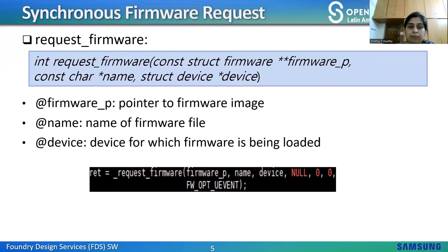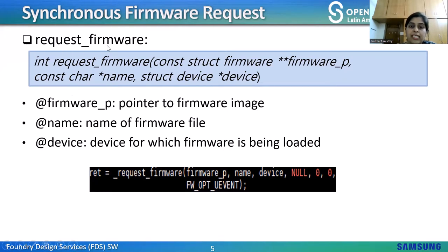Synchronous firmware requests will wait until the firmware is found or until an error is returned. In the upcoming slides, we'll discuss various synchronous APIs which are present. First, we'll discuss request_firmware — it sends a firmware request and waits for it.